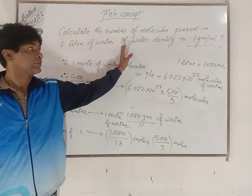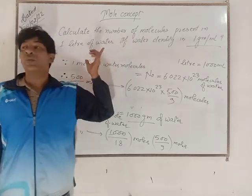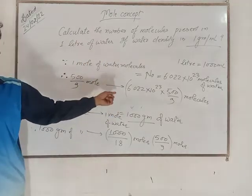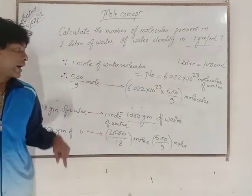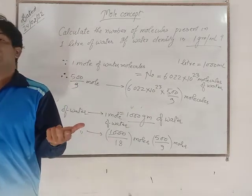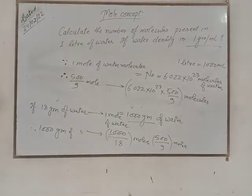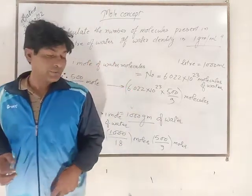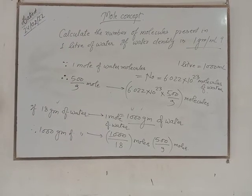Now further you can calculate very easily. You can see how easy is this problem from the mole concept. First of all, you take the volume in grams, then taking 1000 grams you convert it into moles, and using Avogadro number you can calculate the number of molecules. Okay, very much. We are meeting with new video very soon. Till that, thank you very much.